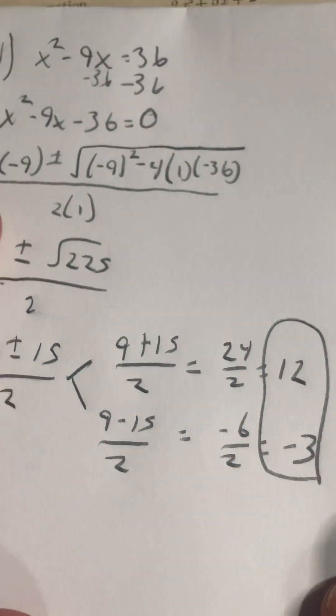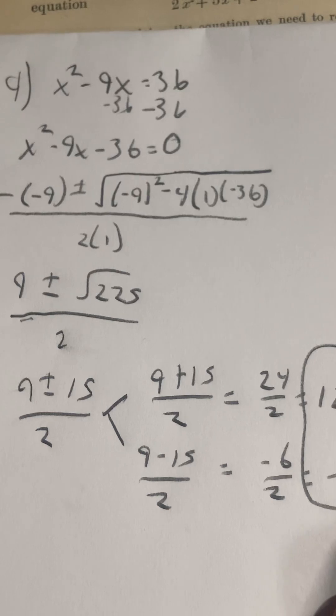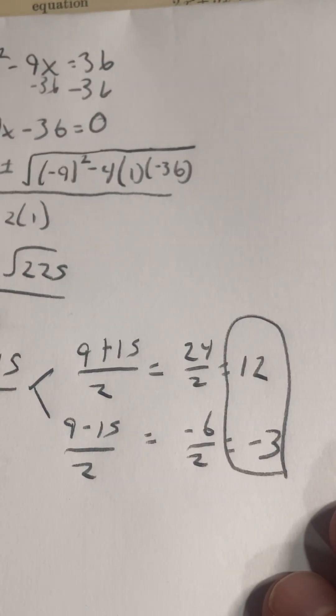So our two answers would be 12 and negative 3, which means that this quadratic could have been factored to begin with without using quadratic formula. But cool question from 1922.